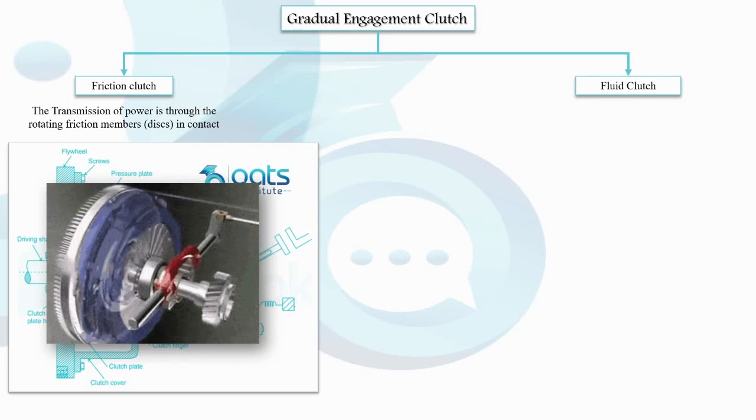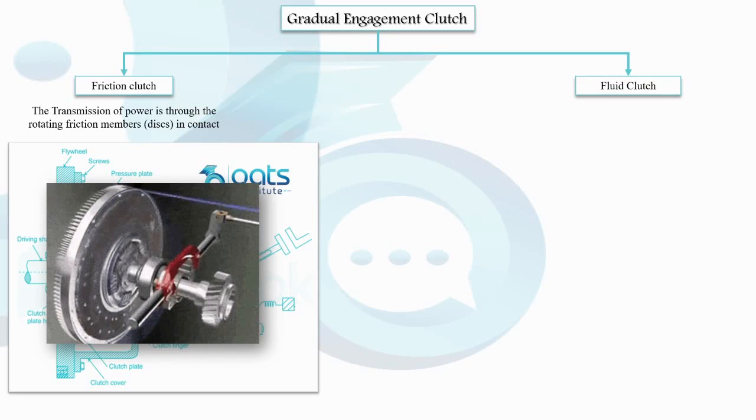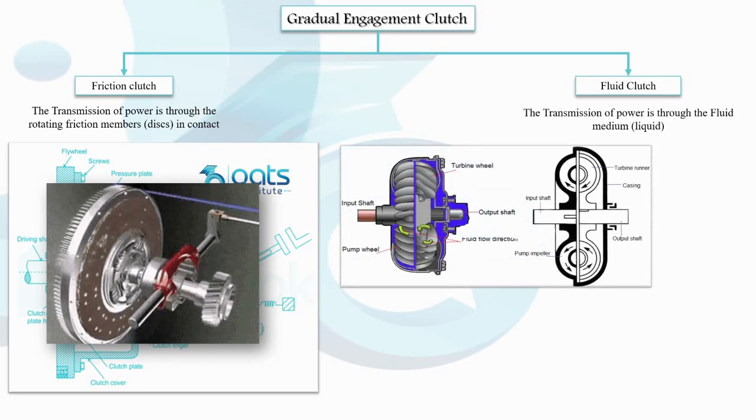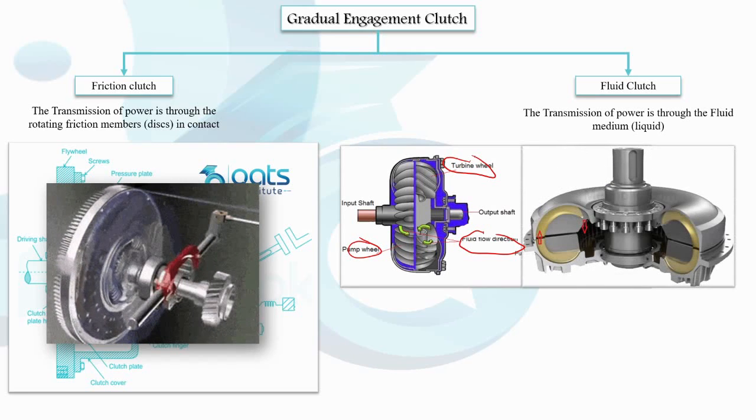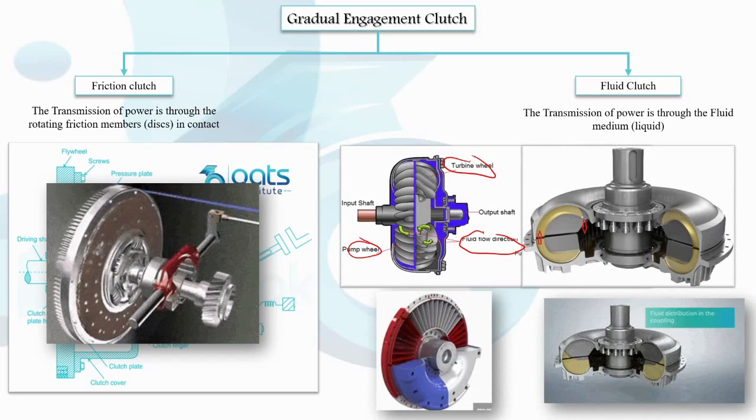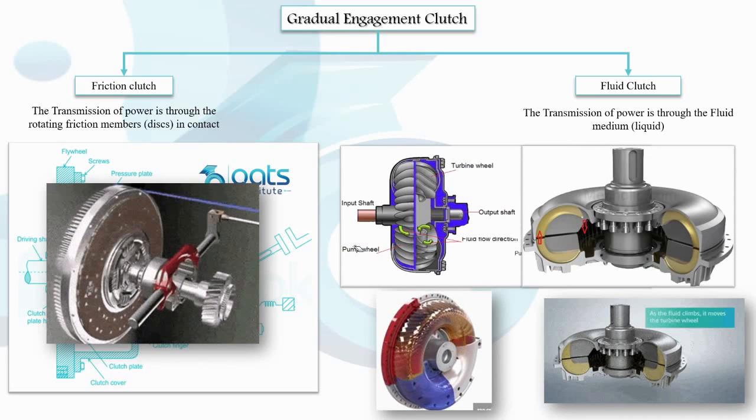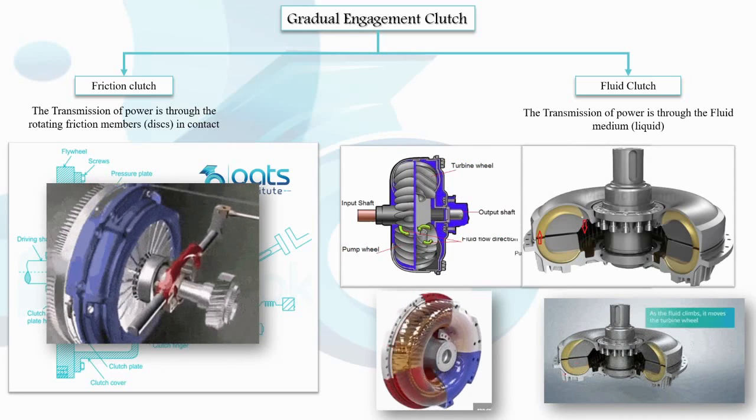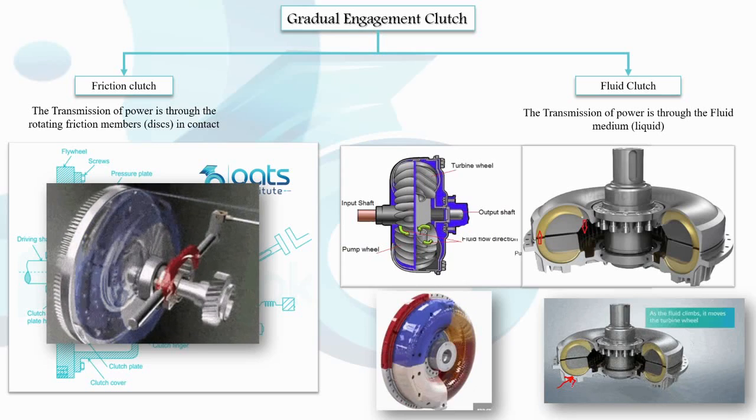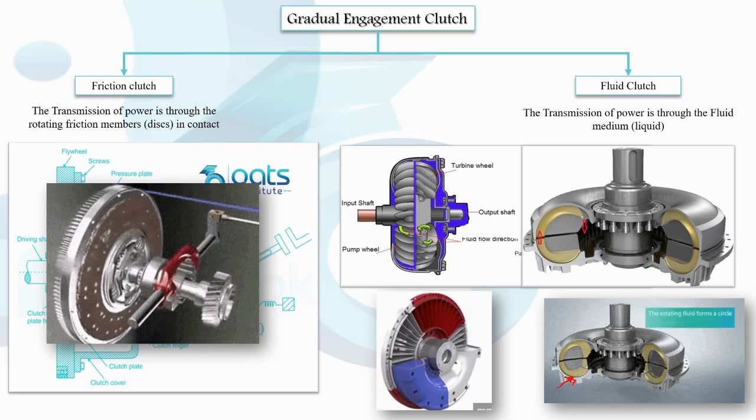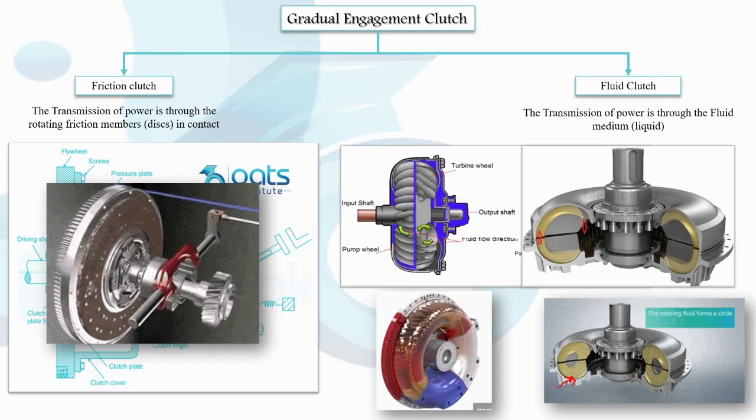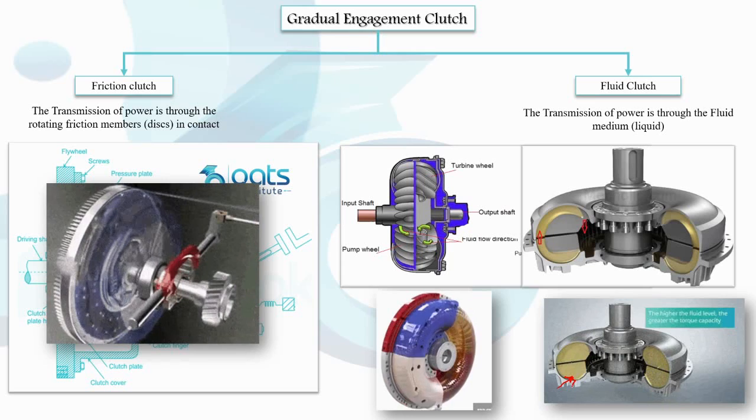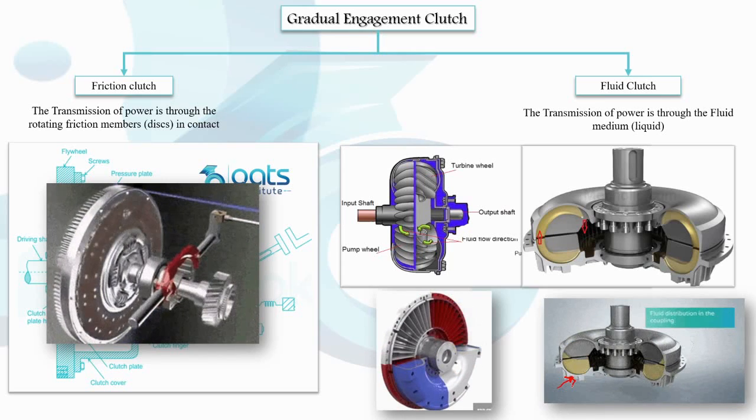Now, moving on to the fluid clutch. We encounter a more advanced system of power transmission. Here, the power flows through a fluid or liquid medium. This type of clutch provides a seamless and jerk-free engagement of gears while also dampening any potential shock that may occur when connecting a revolving crankshaft to the transmission. It offers a refined and efficient power transmission from the engine crankshaft to the transmission system, ensuring a smoother overall driving experience.